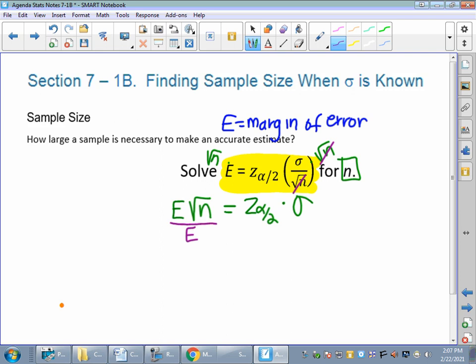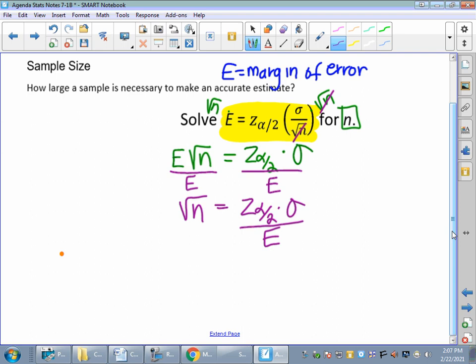So then if I'm still solving for n, I feel like I should divide by margin of error. So square root of n is equal to z of our alpha over 2 times sigma all over E. And then we know the last step. If we've got a square root of n, we're going to square everything.